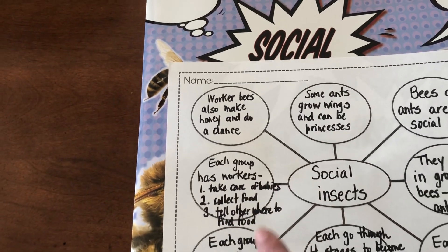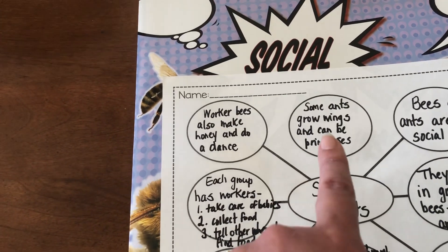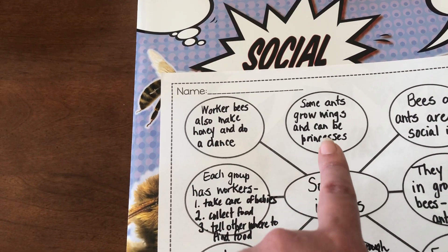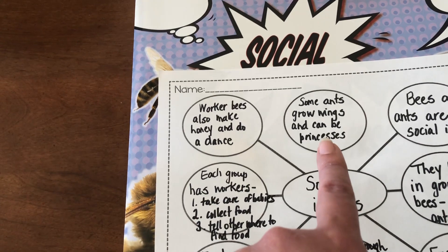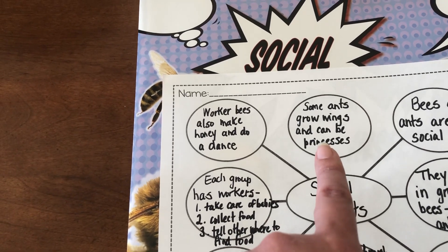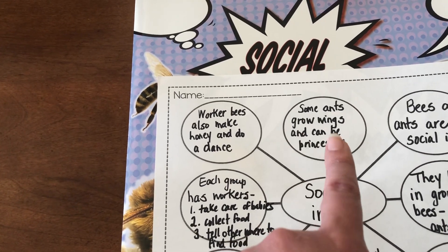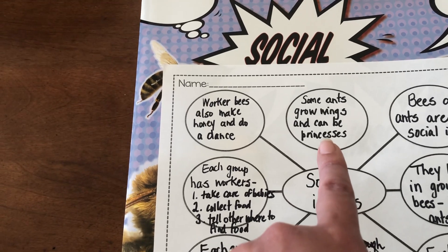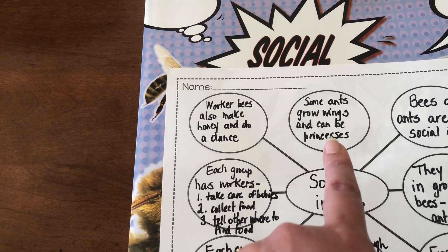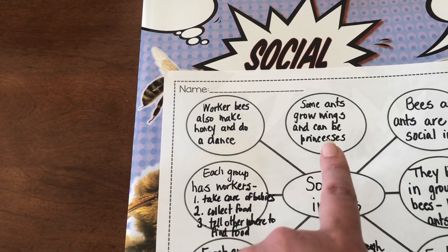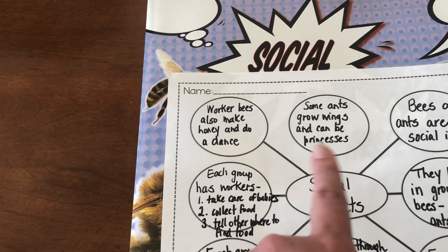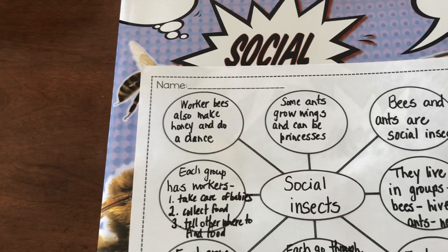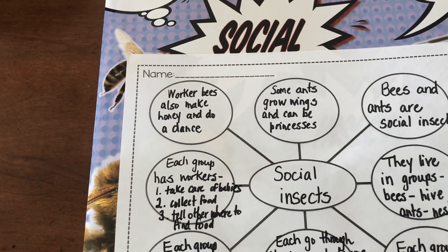For ants, some grow wings if they're fed more food — those are the drones. They can turn into a princess if they're a girl, then lay eggs and become the queen. If they're a boy, they help the princess lay the eggs and then they die. And that's the job of the drone.